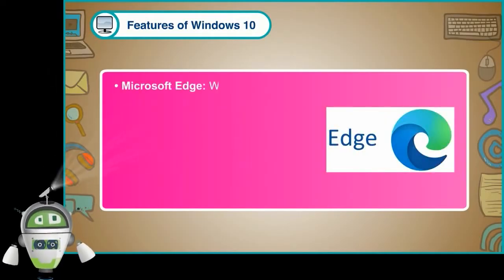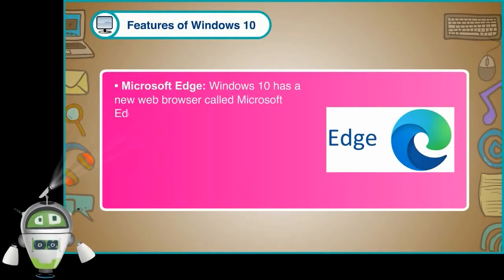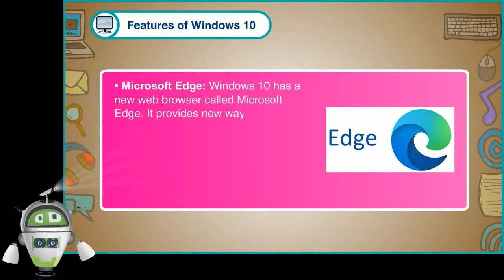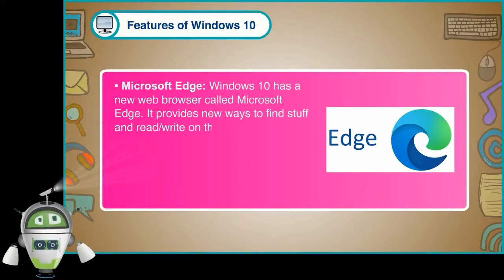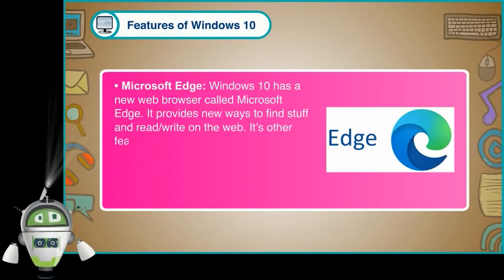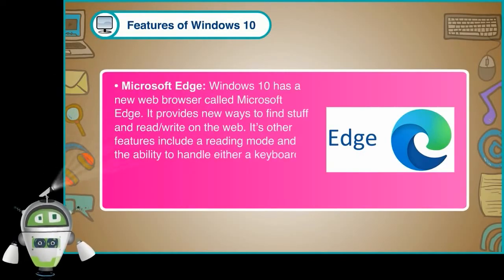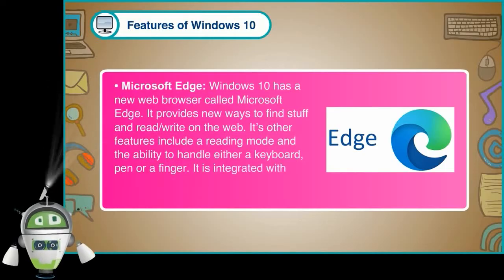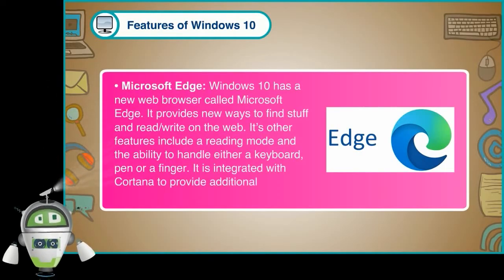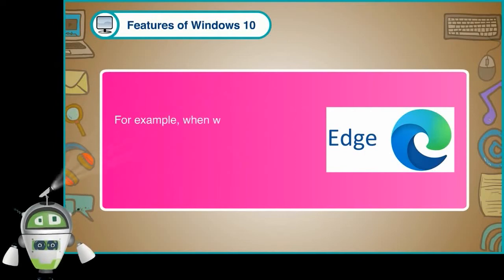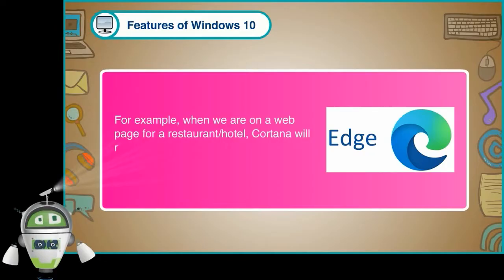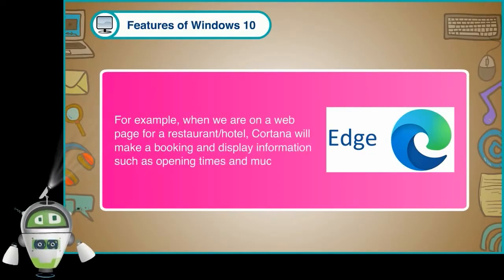Microsoft Edge: Windows 10 has a new web browser called Microsoft Edge. It provides new ways to find stuff and read or write on the web. Its other features include a reading mode and the ability to handle either a keyboard, pen or a finger. It is integrated with Cortana to provide additional information. For example, when we are on a web page for a restaurant or hotel, Cortana will make a booking and display information such as opening times and much more.